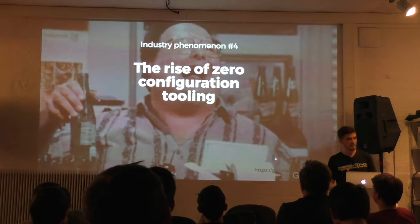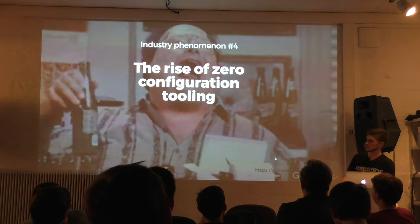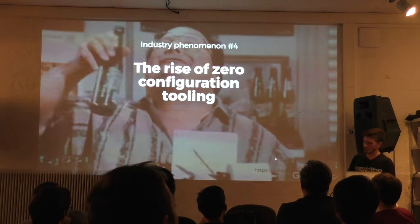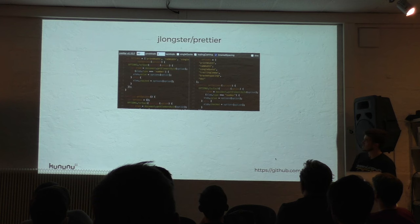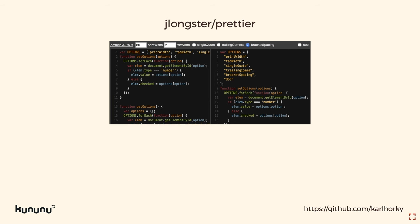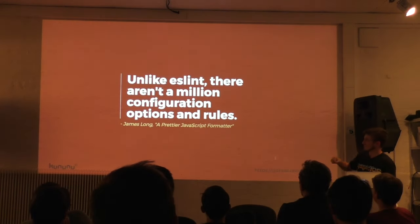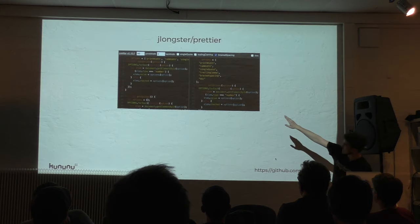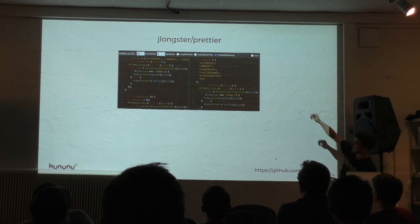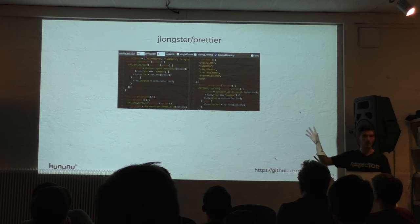Several projects have come out recently that are really popular and contribute to the trend of zero or low configuration tooling. One is Prettier — a code formatter, similar to ESLint fix. Unlike ESLint, there aren't a million configuration options. It's got things like max line width, tab width, single quotes, trailing commas — and they're even thinking that's maybe too many options.